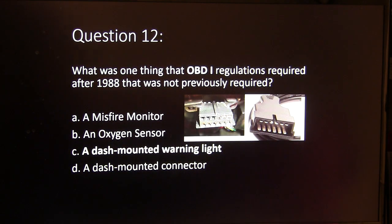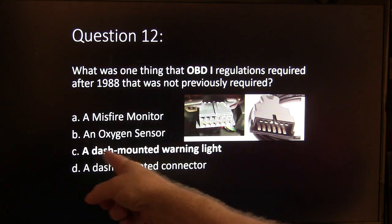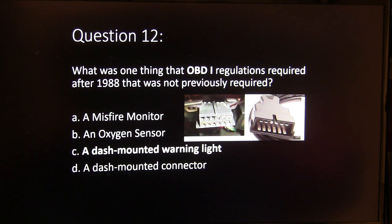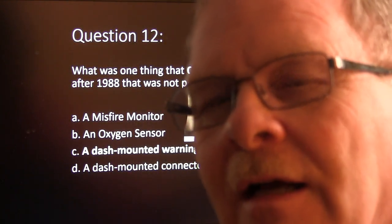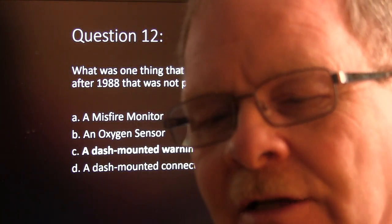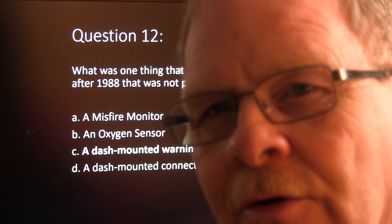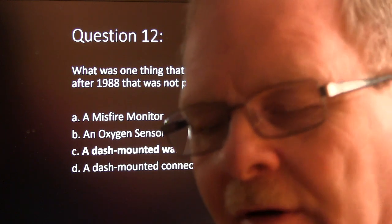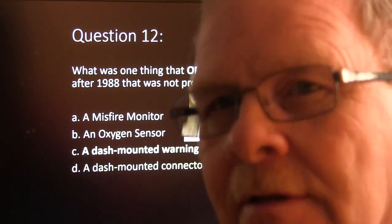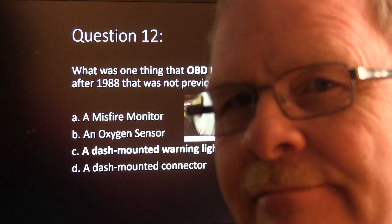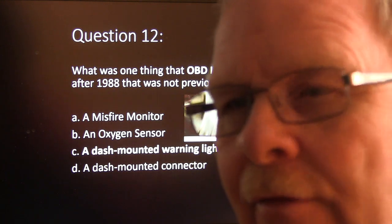OBD-1 regulations required a dash-mounted warning light beginning in 1988. That's when Ford first put one on there. Jeep managed to dodge that for another year or two, but 1988 was the drop-dead deadline for the most part.